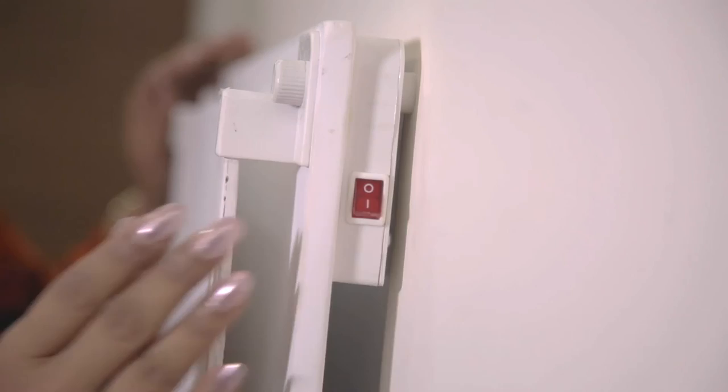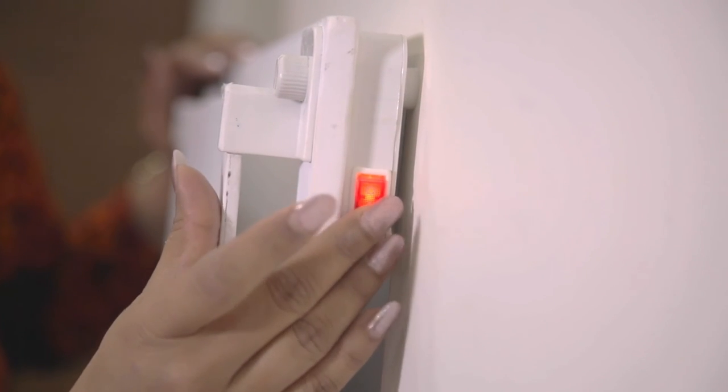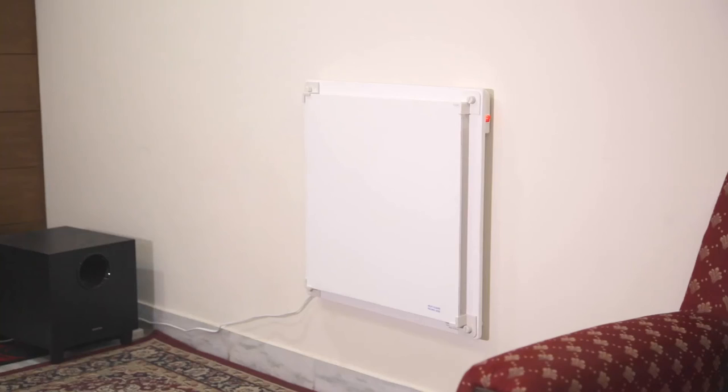Plug the heater into any standard two-pin socket and turn the switch on. The installation of your HeatGuard Model Amaze heater is now complete.